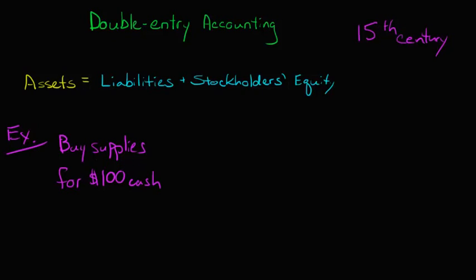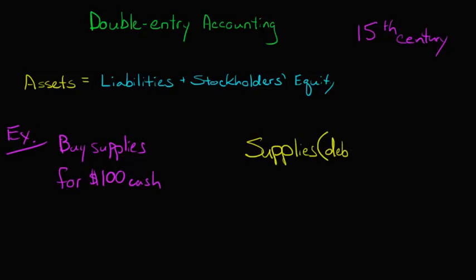So we're buying supplies. What are supplies? Well, supplies are an asset. And we talked about in our previous video, assets increase with a debit. So we're going to make a journal entry — supplies — and this is a debit. So supplies is going to go up by $100; it increases with a debit.